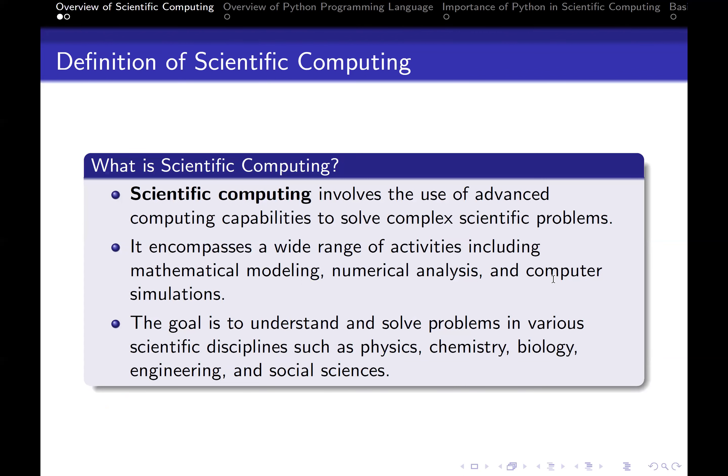What is scientific computing? Scientific computing involves the use of advanced computing capabilities to solve complex scientific problems. It encompasses a wide range of activities, including mathematical modeling, numerical analysis, and computer simulations. The goal is to understand and solve problems in various scientific disciplines such as physics, chemistry, biology, engineering, and social sciences. So scientific computing is essentially the combination of mathematics and computer science to solve problems across various fields.